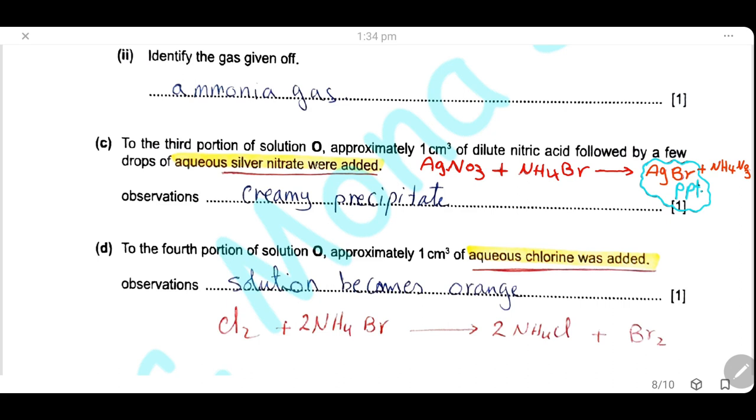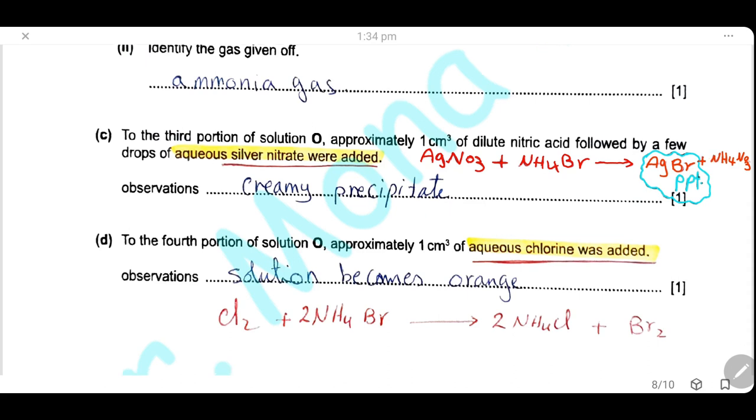The third portion of solution O: 1 cm³ of dilute nitric acid followed by a few drops of silver nitrate were added. Silver nitrate will react with ammonium bromide to give silver bromide, which is a creamy precipitate. So our observation will be creamy precipitate is formed.